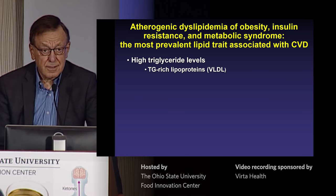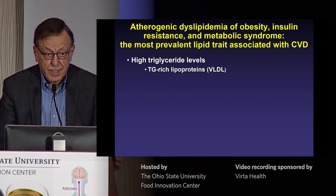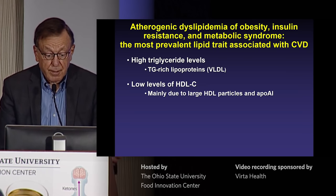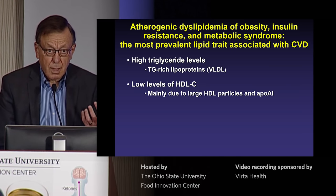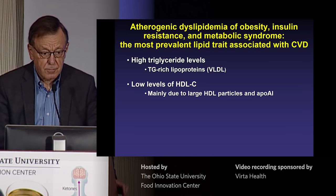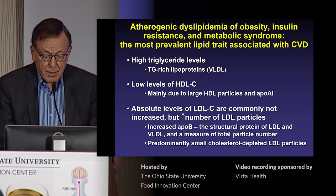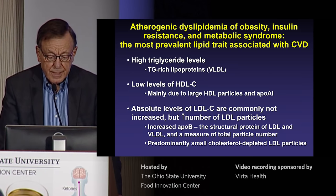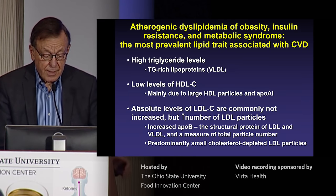What is atherogenic dyslipidemia? It consists of a triad, including high triglyceride levels — which translates to increased levels of triglyceride-rich lipoproteins, or VLDL — low levels of HDL cholesterol, mainly due to a reduction in large HDL particles. And then that relates importantly to LDL cholesterol, since absolute levels of LDL cholesterol are commonly not increased, but there is an increased number of LDL particles. This is also reflected in increased levels of apoprotein B, which is the structural protein of LDL and a measure of total particle number, both LDL and VLDL.